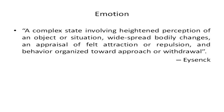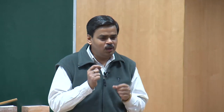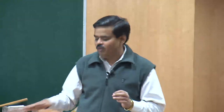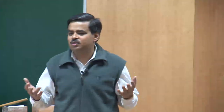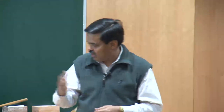I am taking one of the definitions of emotion given by Ising, where he says that emotion is basically a complex state which involves heightened perception of an object or situation, widespread bodily changes, and appraisal of felt attraction or repulsion, and behavior organized towards approach or withdrawal. Breaking it up: first, there is an object or situation in your environment, and the perception of that object or scenario is relatively heightened in nature.